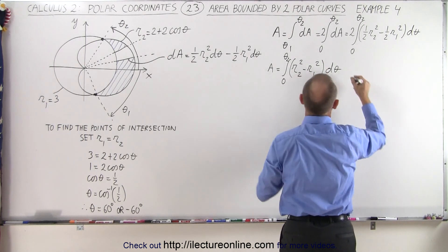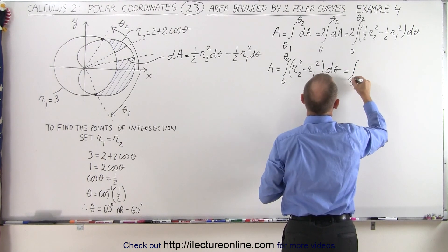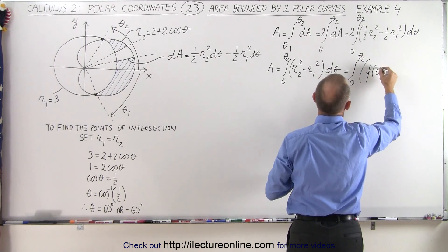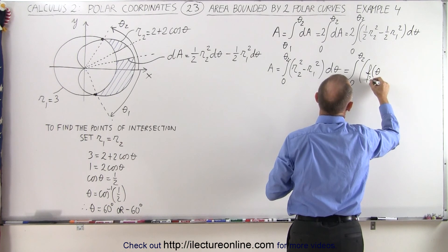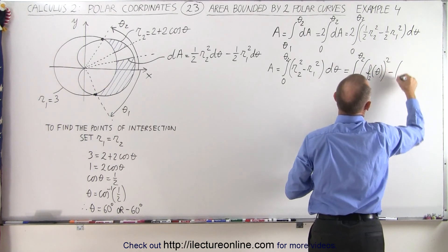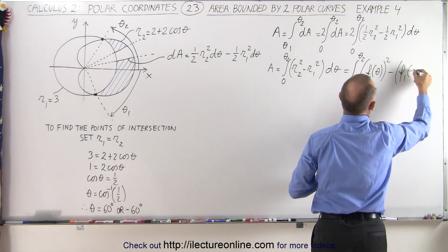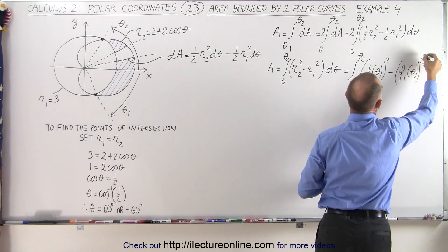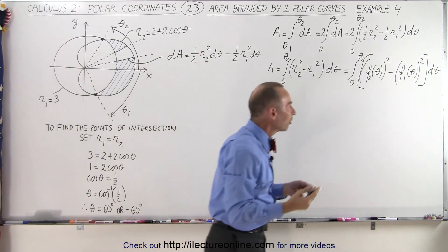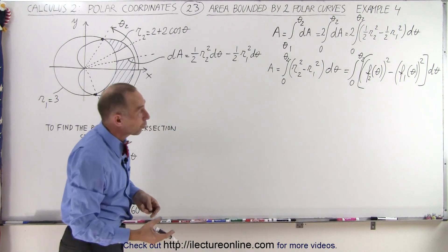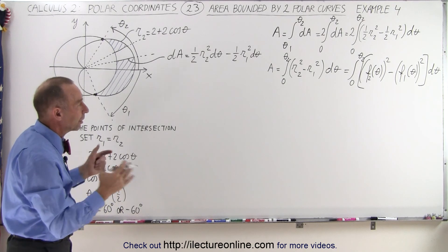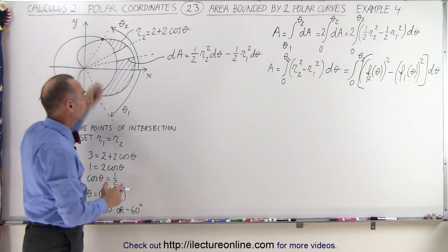We can also write this as the integral from 0 to θ2 of f2(θ) squared minus f1(θ) squared, times dθ. R represents the function, so it's basically function 2 squared minus function 1 squared, integrated from 0 to θ2, and that gives us the entire area.